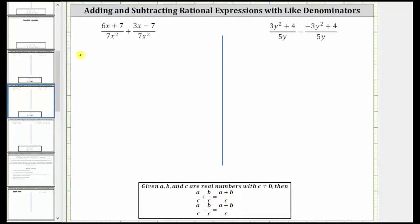So for the first example, when we find this sum, the denominator remains 7x squared, and the numerator is going to be the quantity 6x plus 7 plus the quantity 3x minus 7. And now we clear the parentheses and combine like terms. If it's helpful, we can think of distributing a positive one here as well as here to clear the parentheses, which will not change any signs.